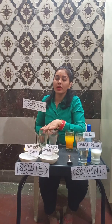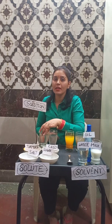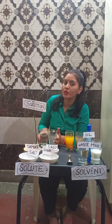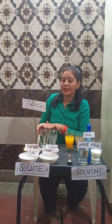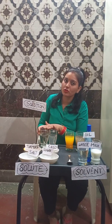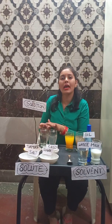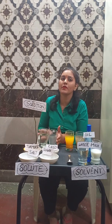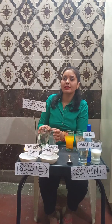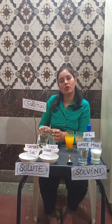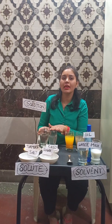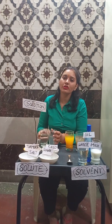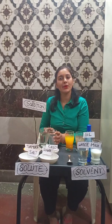Sugar and salt are soluble in water, so these are called solutions. In this glass the solute is sugar, and in this glass the solute is salt, and the solvent is water — these are called solutions. When a solute dissolves in a solvent, it is called a solution. Thank you.